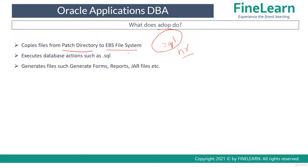Once files are copied, ADOP performs any required database actions. For example, a dot SQL file that has been copied must be executed, which is a database activity. Finally, ADOP also generates files — for example, new forms (.fmb files) copied from the patch to the EBS file system need to be compiled. Similarly, it generates reports, JAR files, message files, and so on. These same activities also apply to AD Patch in the previous version, 12.1.